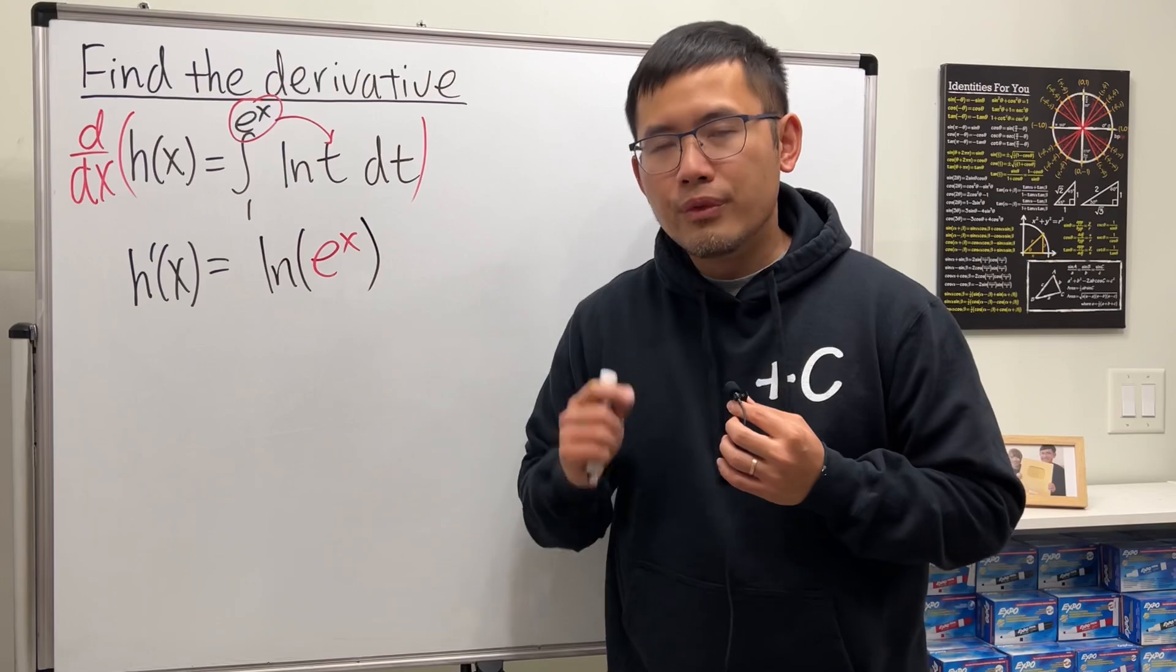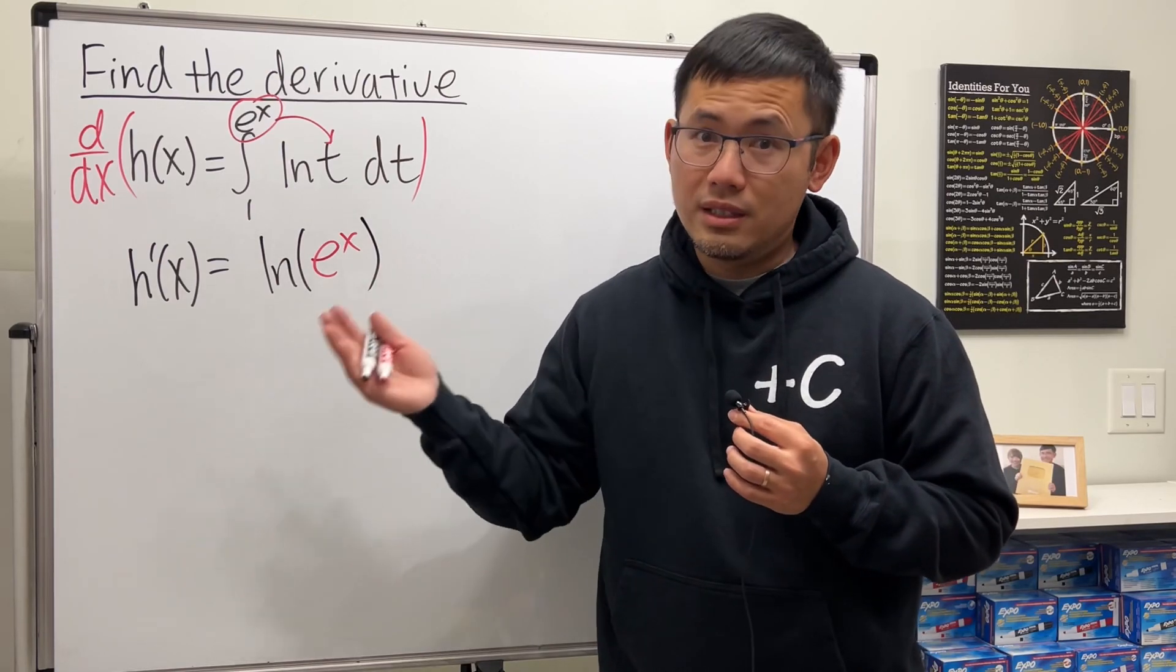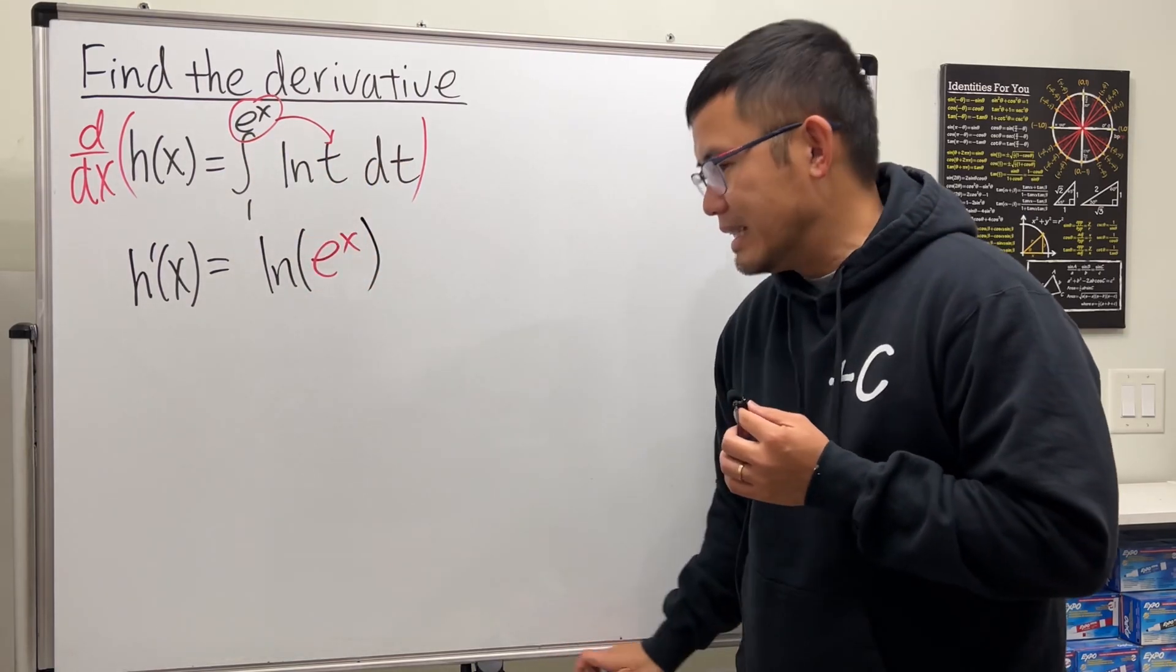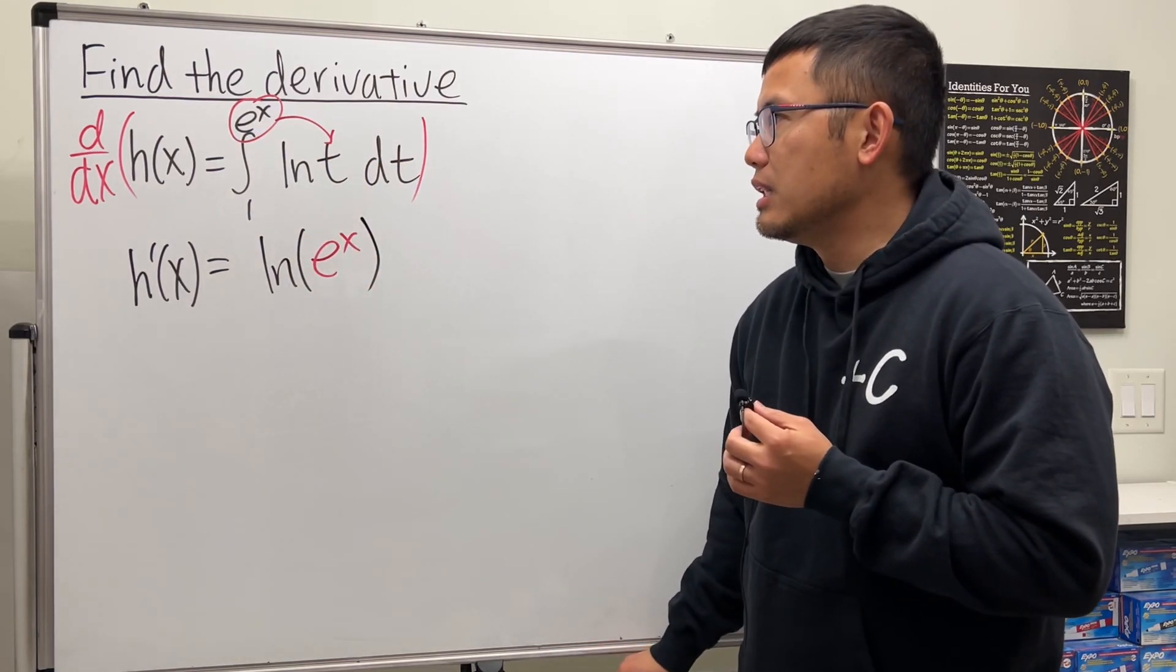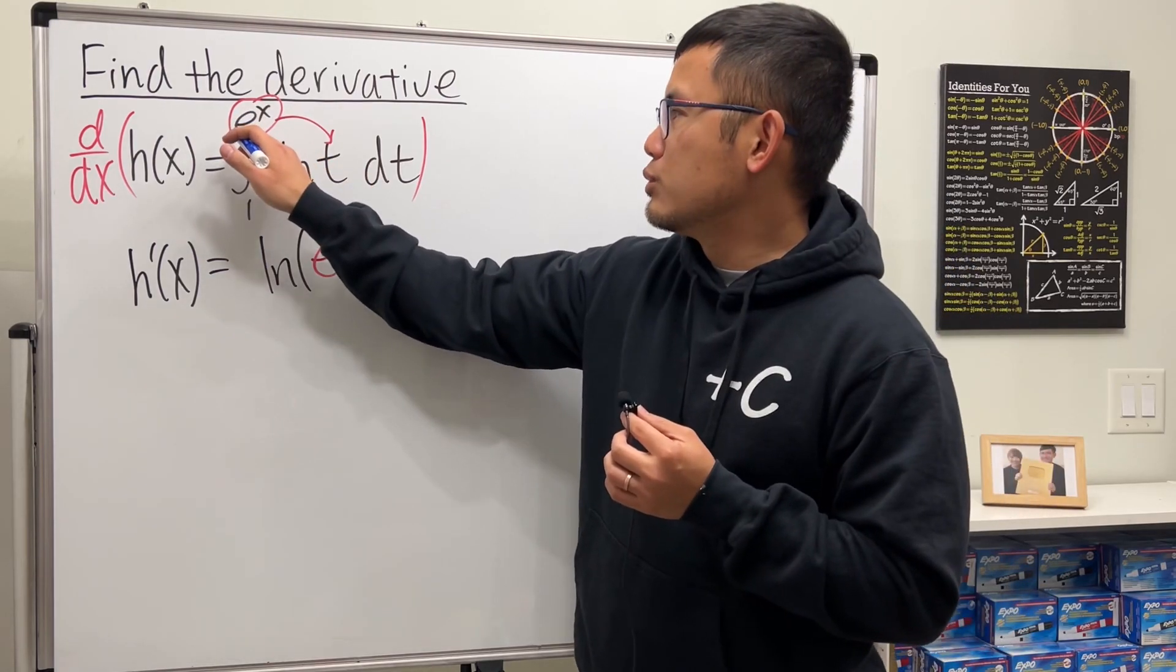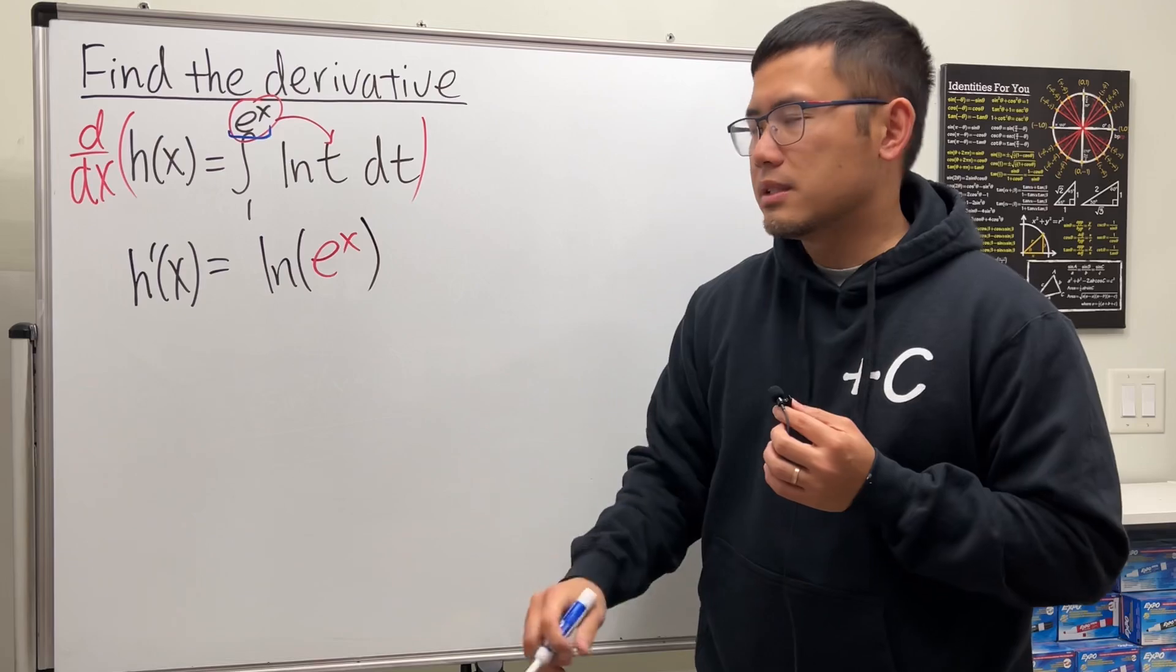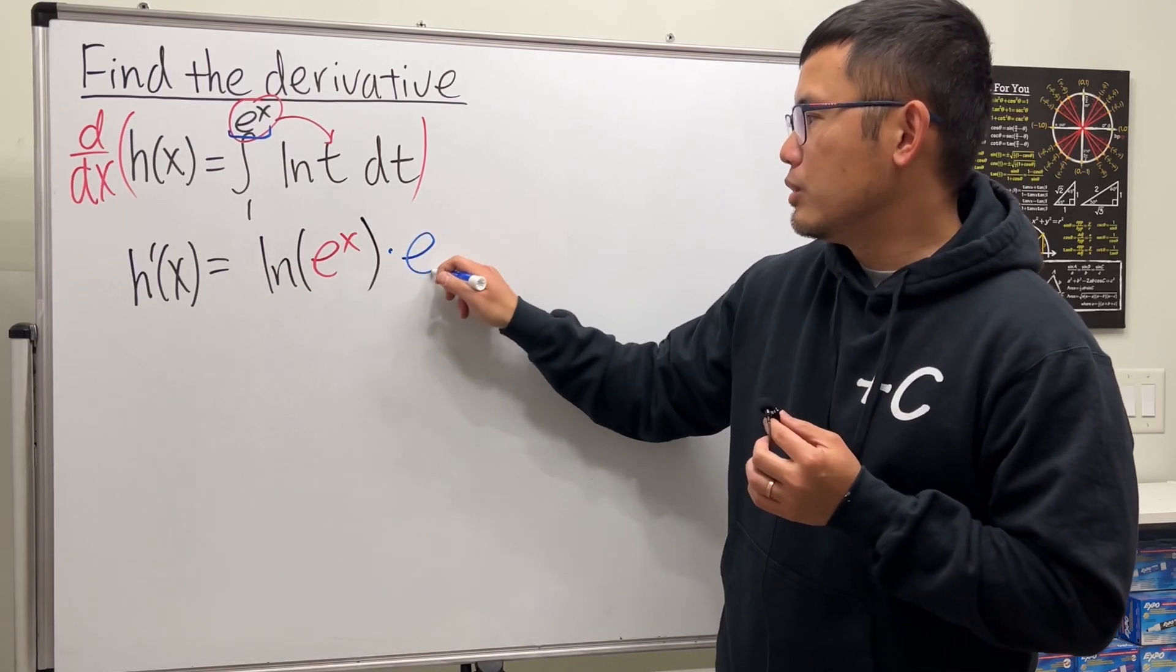Now wait, there's one more thing. Don't forget the chain rule whenever we take the derivative. So plug it into here, and then ask yourself, what is the derivative of the inner function, which is this one right here. Derivative of e to the x is e to the x, so you multiply by e to the x.